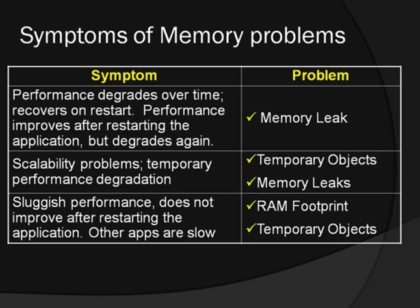Other symptoms are scalability problems and temporary performance degradation. This is where a part of the functionality of an application suddenly runs slowly, and this very commonly is due to temporary objects, where an area of functionality is allocating large numbers of temporary objects, causing the garbage collector to work much harder and causing freezes during collection. Memory leaks can also manifest this kind of problem.